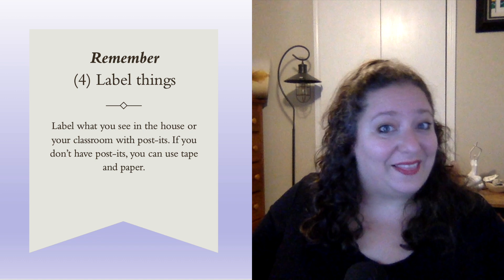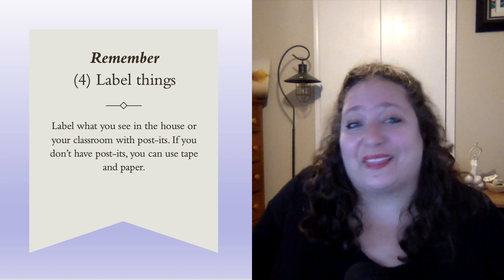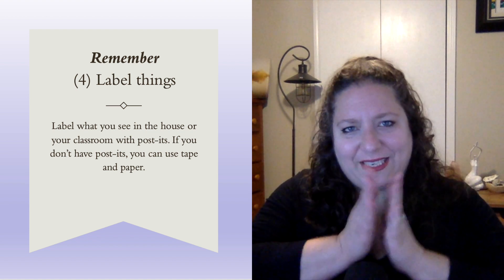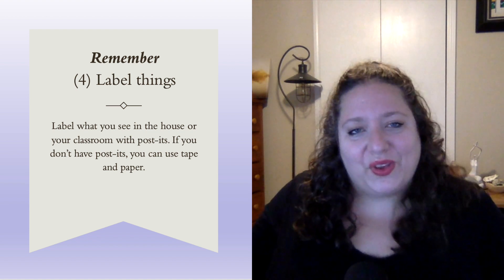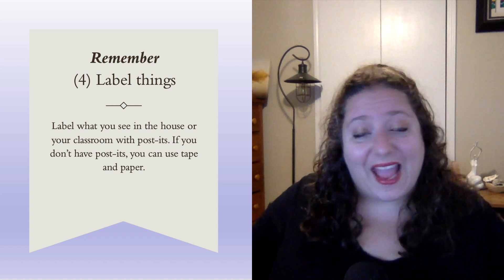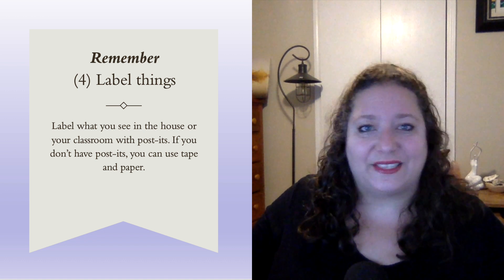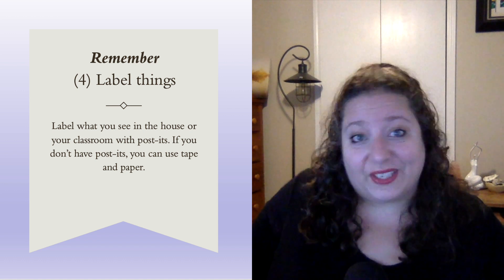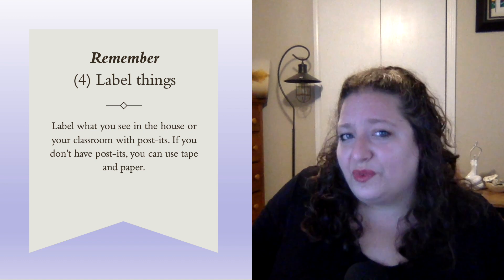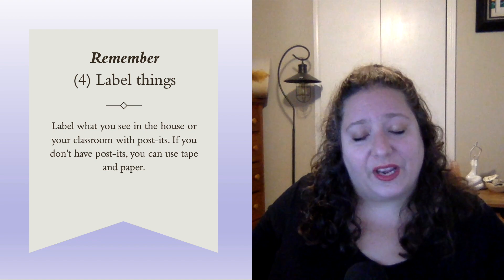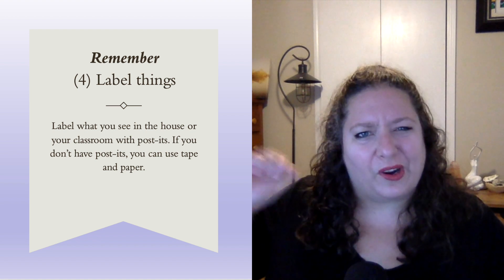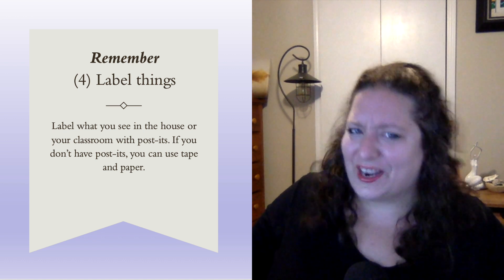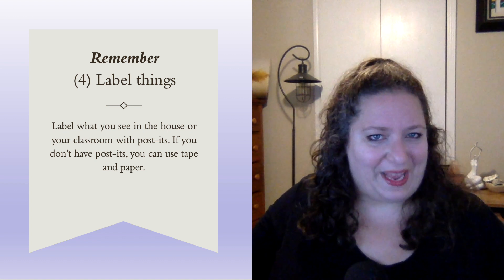The next one, and this one is fun, is labeling things. If you have post-its — the sticky pieces of paper — you can go around your house and label what you see: the lamp, the table, the chair. You can also do this at school. And if you don't have post-its, you can use a little piece of paper and some tape. This is a good way to practice interacting with your environment.